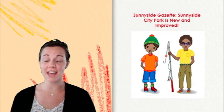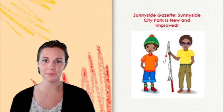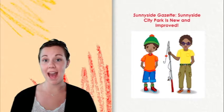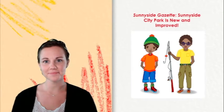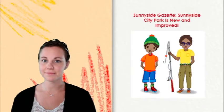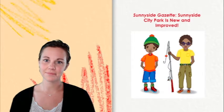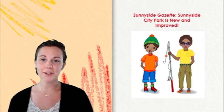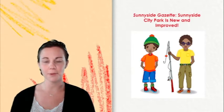Now that we've listened to that edition of the Sunnyside Gazette, I have a few questions for you. What did Mayor Mack and the volunteers do in Sunnyside Park? The article mentioned that the pond had been stocked with fish. What does that mean?